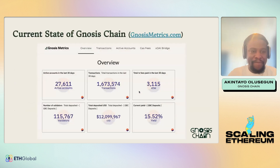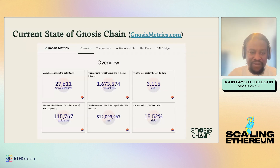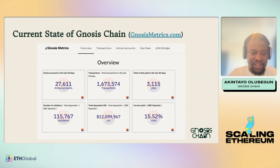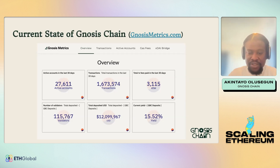Transaction fees are predictable and not subject to market volatility. Stability is a key benefit — paying for transactions using xDai, which is one-to-one with the US dollar, means your fees are predictable. Here is the current state of Gnosis Chain — you can see this info on gnosismetrics.com. We have about 27,000 active accounts, 1.6 million transactions processed in the last 30 days, about 3,000 xDai paid in fees, and 115,000 validators.